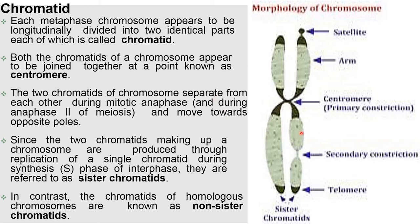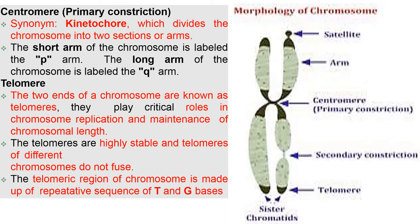Since the two chromatids that make up a chromosome are produced through replication of a single chromatid during S phase of interphase, they are referred to as sister chromatids. In contrast, the chromatids of homologous chromosomes are known as non-sister chromatids. The centromere, also called the primary constriction or kinetochore, divides the chromosome into two sections or two arms.